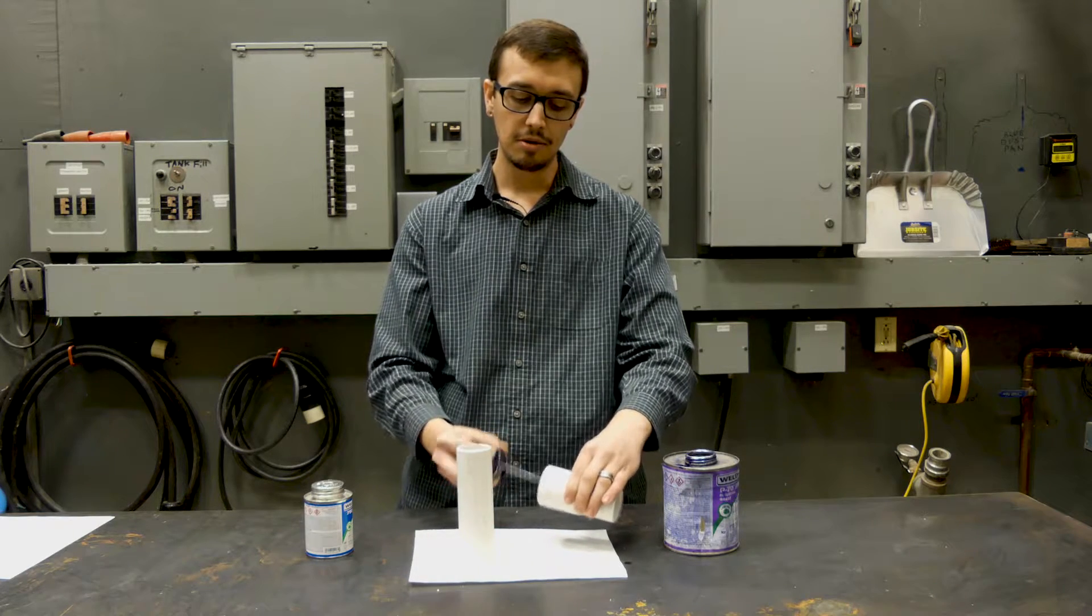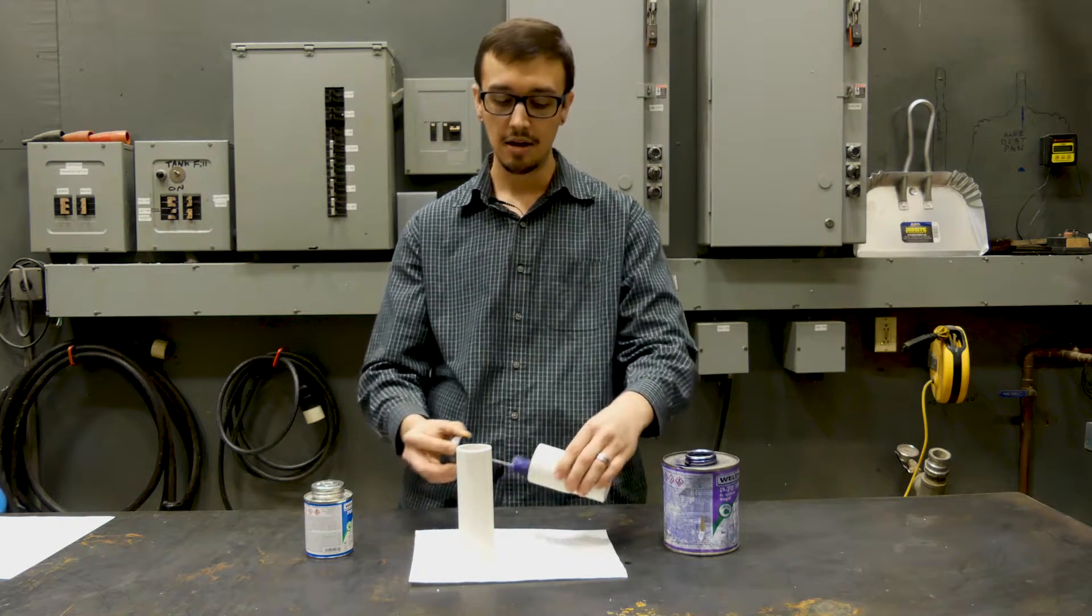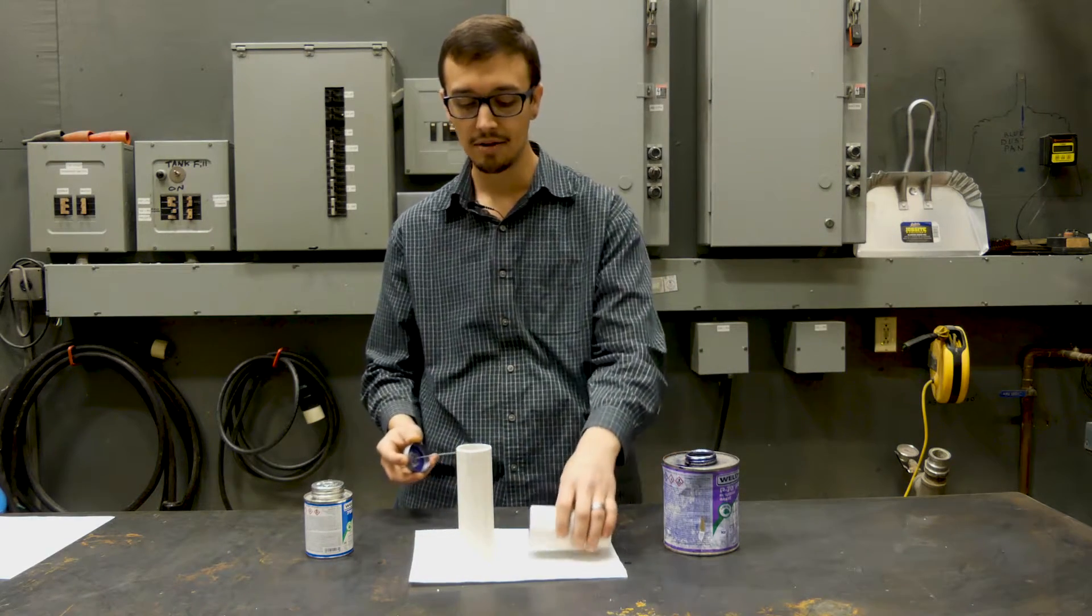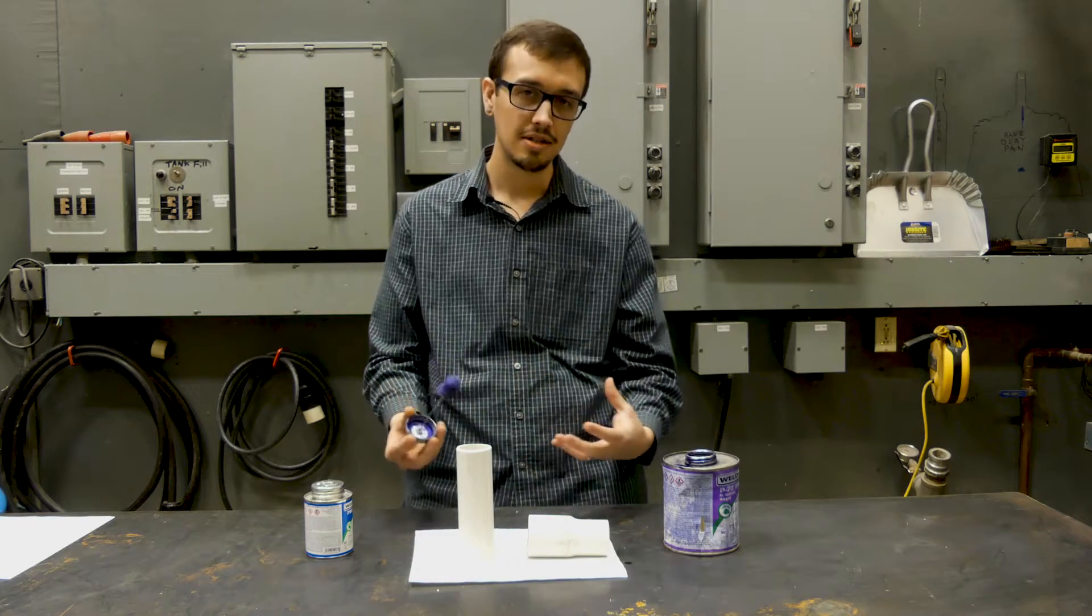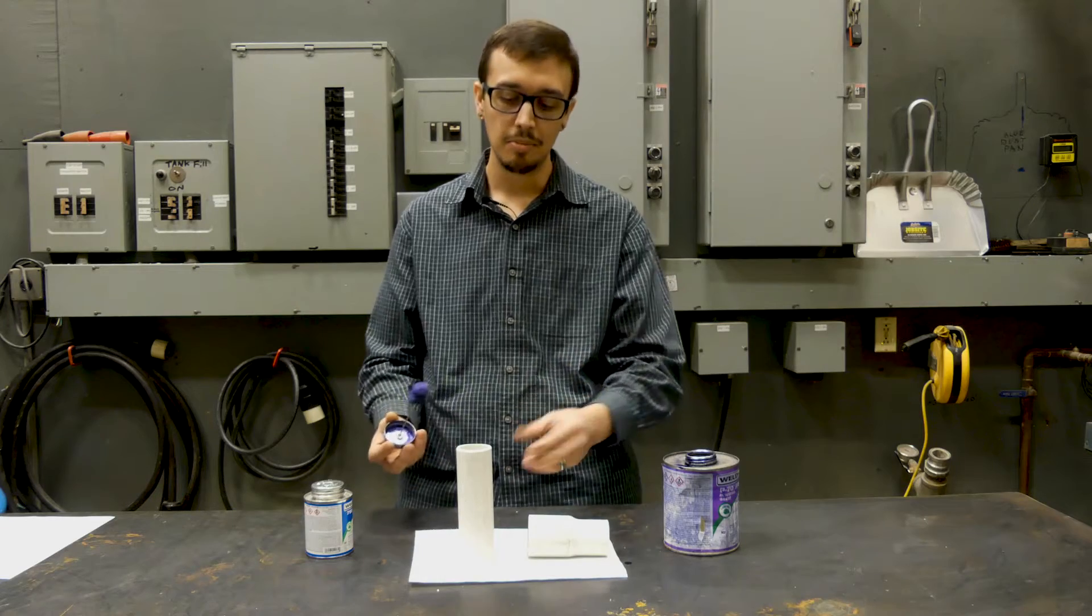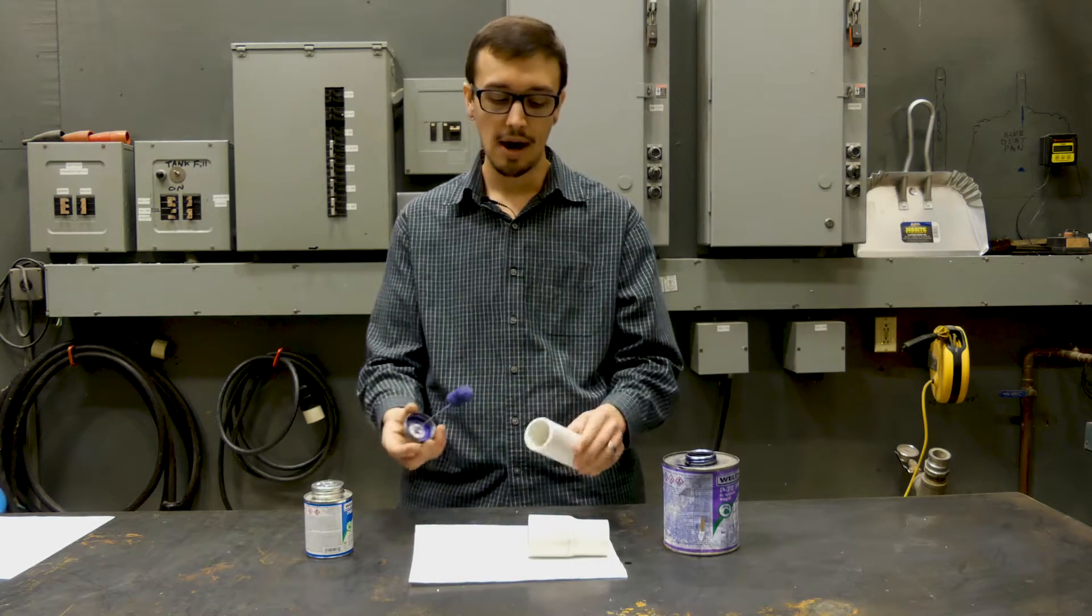And you want to go around with the primer a minimum of 10 times inside of the fitting. You just want to go around and around and around. And that helps to ensure good contact time and that all the PVC is evenly coated. So it's going to soften up and get a good strong tight seal all the way around.